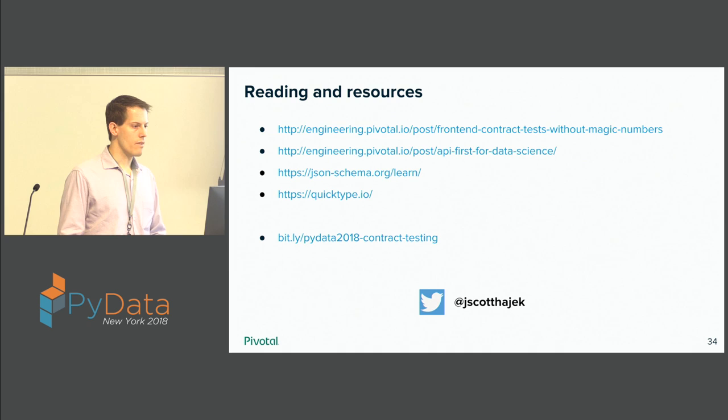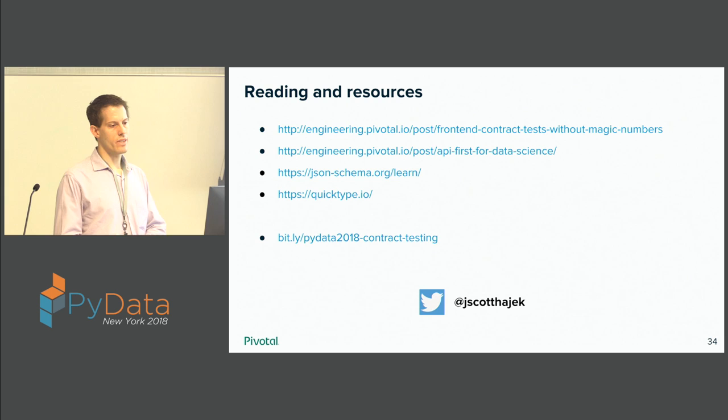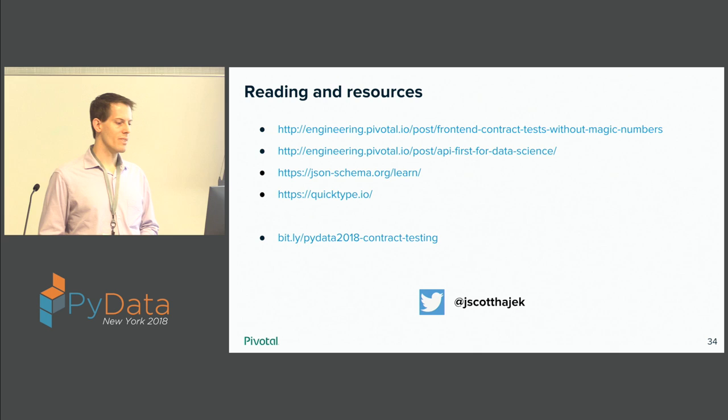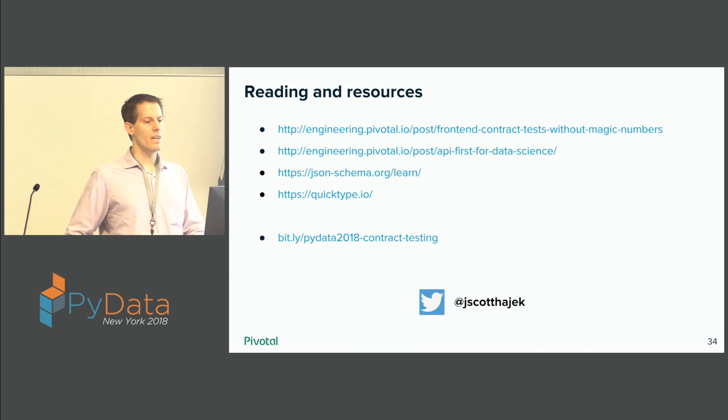I've made a few notes — the thinking about magic numbers and avoiding them is something from some of my colleagues, and some other colleagues have talked about an API-first approach for data science, along with links to the tools and specifications I mentioned. I'm eager to get in touch with anyone who wants a follow-up — they can follow up through Twitter. Thank you very much for your attention.